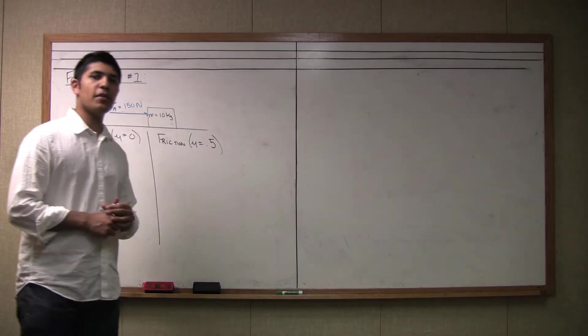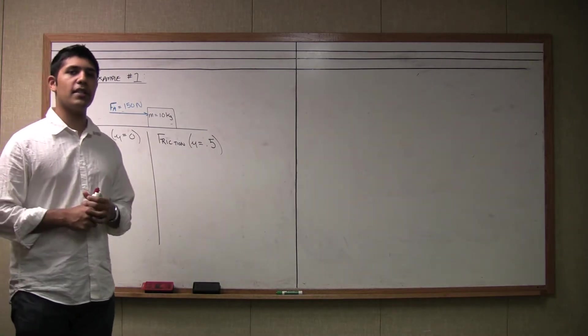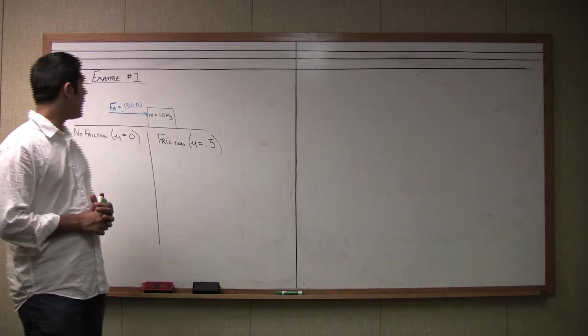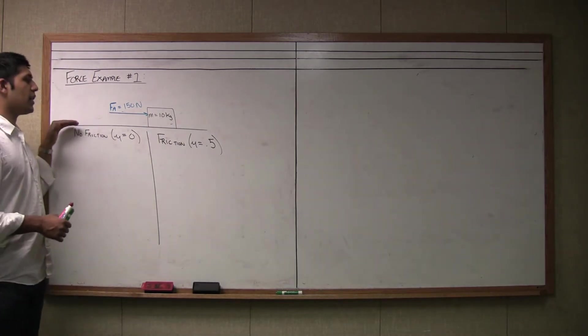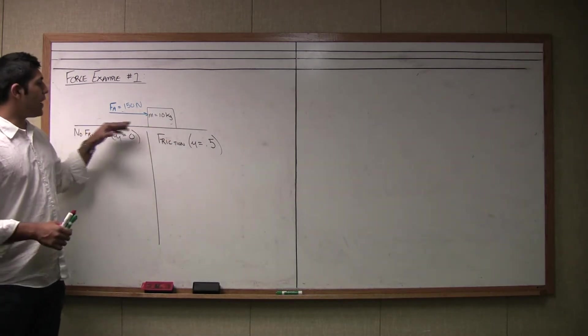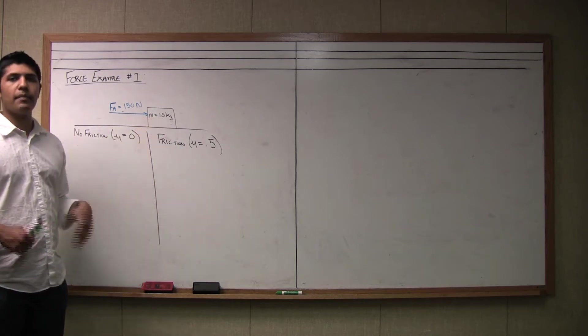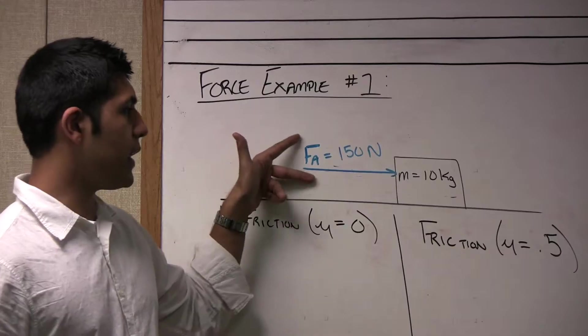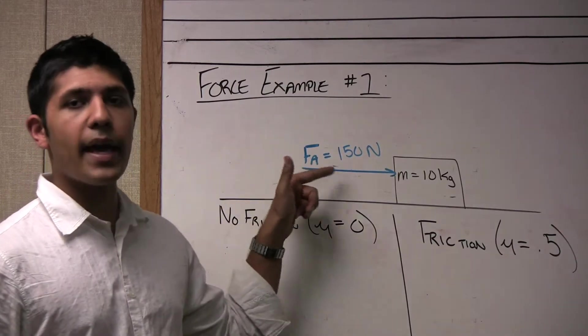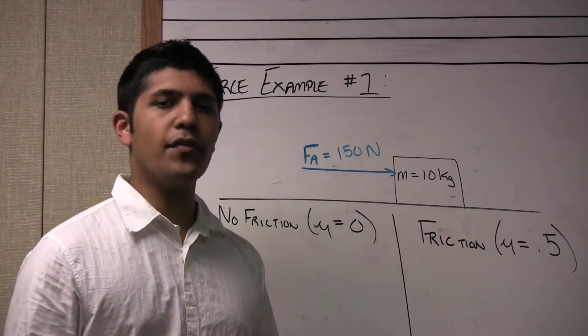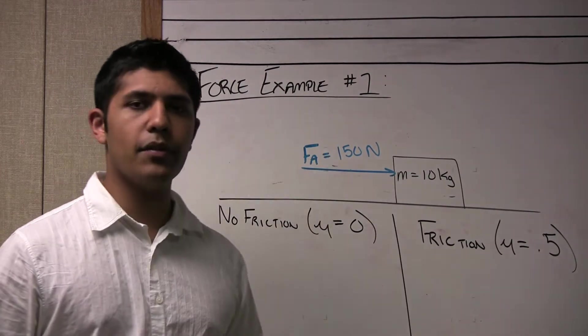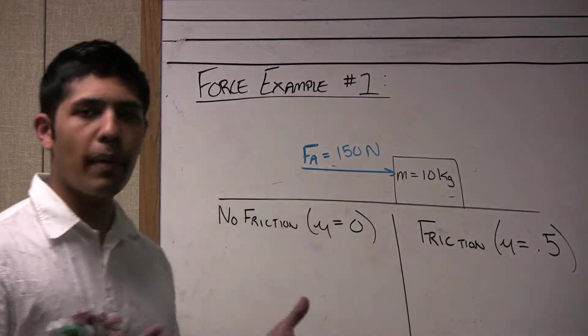All right guys, as promised I am going to do a couple of force problems. I really want you to see the appropriate way to attack any sort of force problem. The picture I have drawn here is just a flat surface with a mass of 10 kilograms sitting on that surface. This blue vector here which is labeled F sub A is what I use for the applied force. The applied force is 150 newtons acting towards the right or the positive x axis.